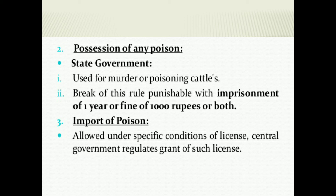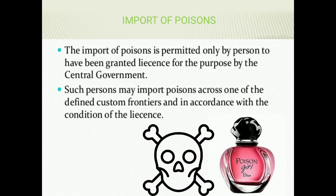Next, import of poison or importation of poison. The central government regulates import of any specified poison by granting the license, with certain specific conditions for the license. The import of the poison is permitted only by persons who have been granted a license for the purpose by the central government. Such persons may import the poison across one of the defined custom frontiers and in accordance with the conditions of the license.